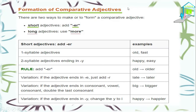Next, we have the formation of comparative adjectives. How do we form the comparative adjective? There are two ways to form comparative adjectives. For short adjectives, we add -ER at the end. For long adjectives, we use 'more' before the adjective. Short adjectives that take -ER are one-syllable adjectives, like 'old' and 'fast.' They become 'older' and 'faster' — we add -ER because they are short adjectives.